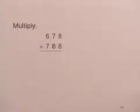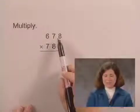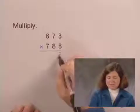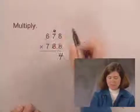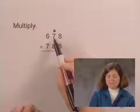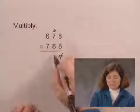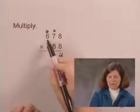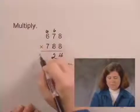We're asked to multiply two whole numbers, 678 times 788. We'll start by multiplying 678 times 8. 8 times 8 is 64. 8 times 7 is 56, plus 6 is 62. 8 times 6 is 48, plus 6 is 54.